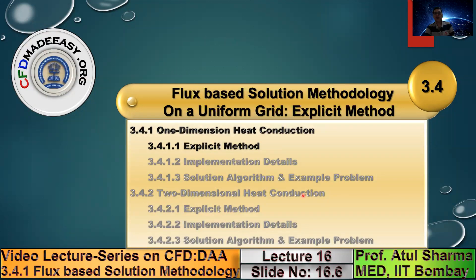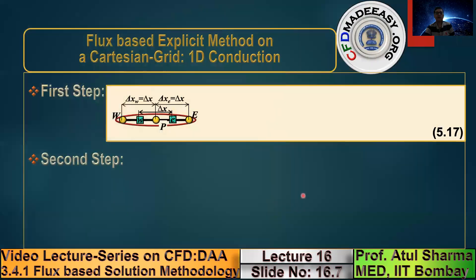While presenting the finite volume method, two different forms of the linear algebraic equation were derived: the first form called the flux form and the second form called the coefficient of linear algebraic equation form. The flux form is used here for flux-based solution methodology. Taking a one-dimensional problem, it could be heat transfer across a thin sheet where the dimension of the sheet is very long along the other two directions. A representative grid distribution is shown along the thickness.